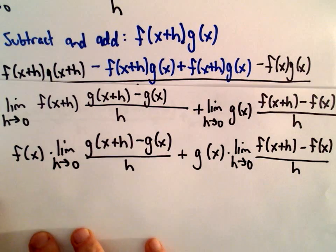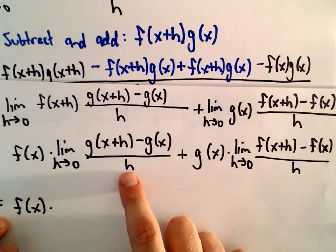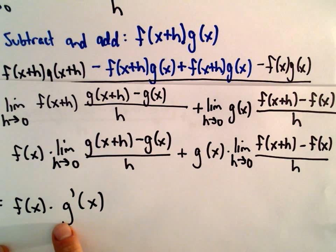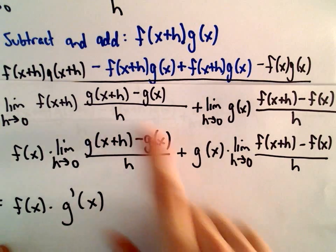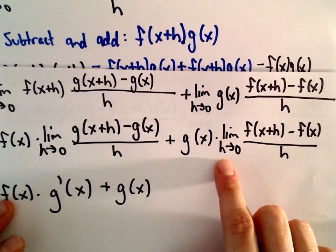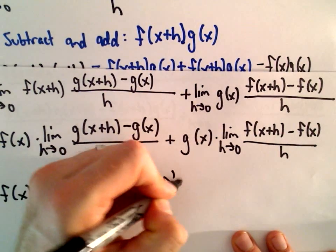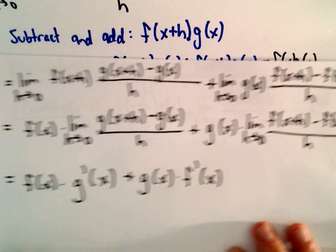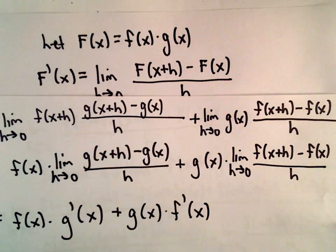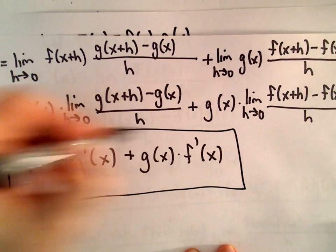The limit as h approaches 0 of g of x plus h minus g of x over h is just the definition of g prime of x. And the limit as h approaches 0 of f of x plus h minus f of x over h is exactly the definition of f prime of x. So proof complete — we wanted to find the derivative of f times g, and after going through the motions, we got exactly what the product rule says we should get.